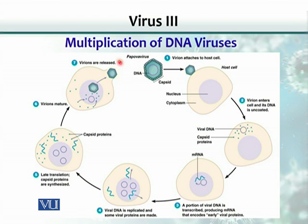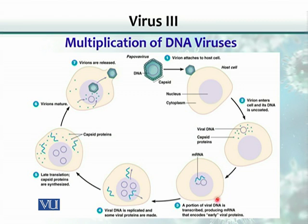Starting with the multiplication of a DNA virus: a DNA virus would attach and then enter into the host cell. The nucleic acid is uncoated by the host enzymes. Because it's DNA, it must encode some proteins. To encode proteins, it needs to make messenger RNA from its DNA. The DNA virus uses the machinery of the cell — the same RNA polymerase that the host cell uses for itself — to make messenger RNA from the viral DNA.